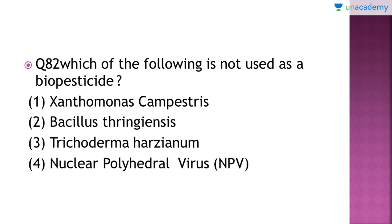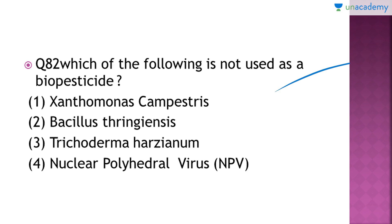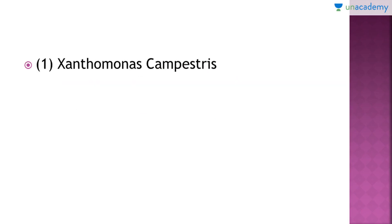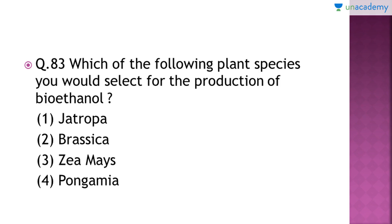Question number 82: 'Which of the following is not used as a bio pesticide?' The right answer is option number 1 — Xanthomonas campestris. It is not a bio pesticide; rather, it is a bacterium that causes a variety of plant diseases such as black rot. The rest of the three options are bio pesticides.